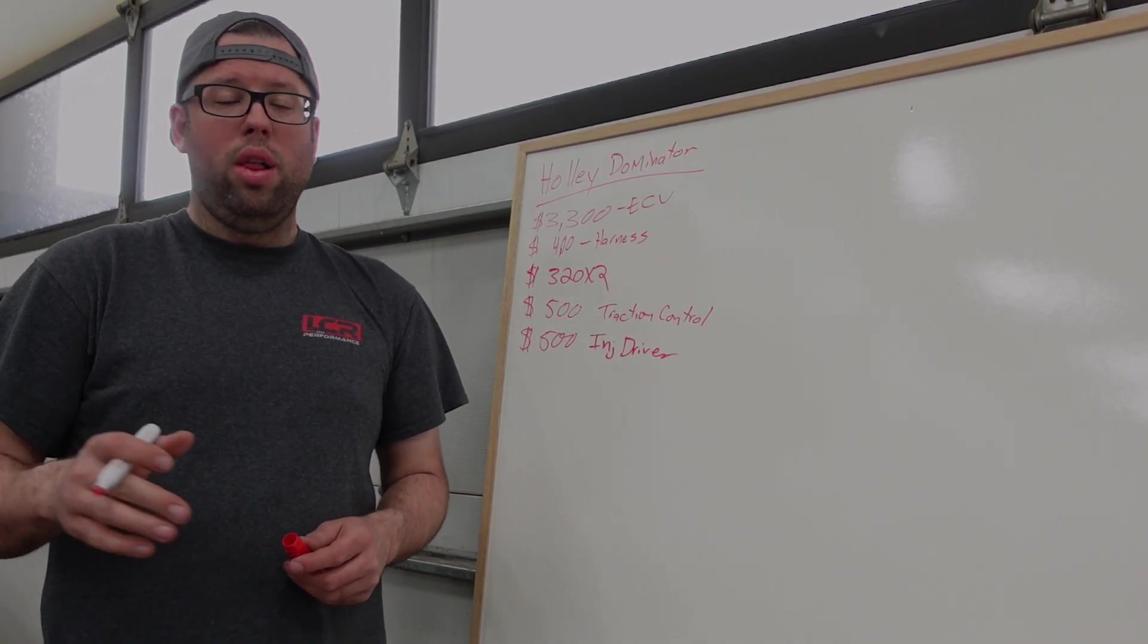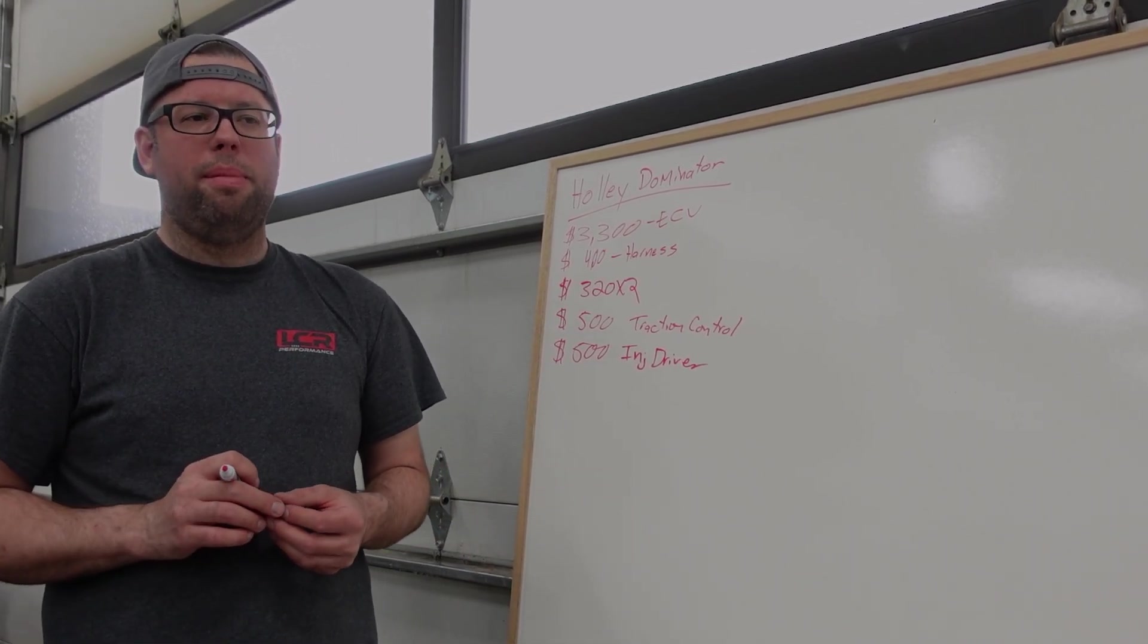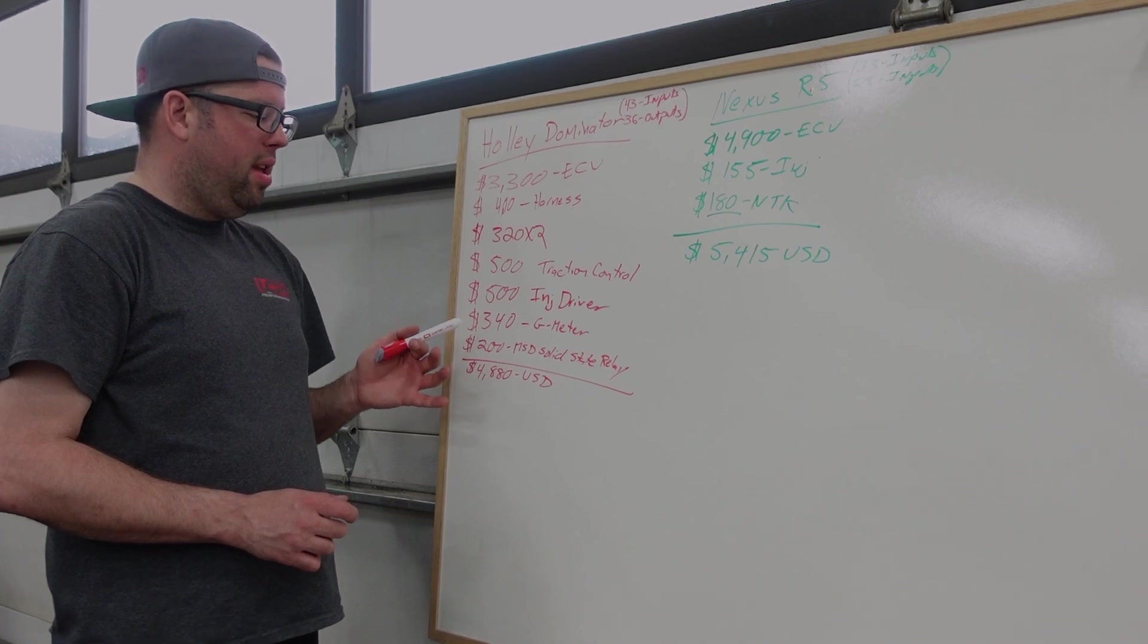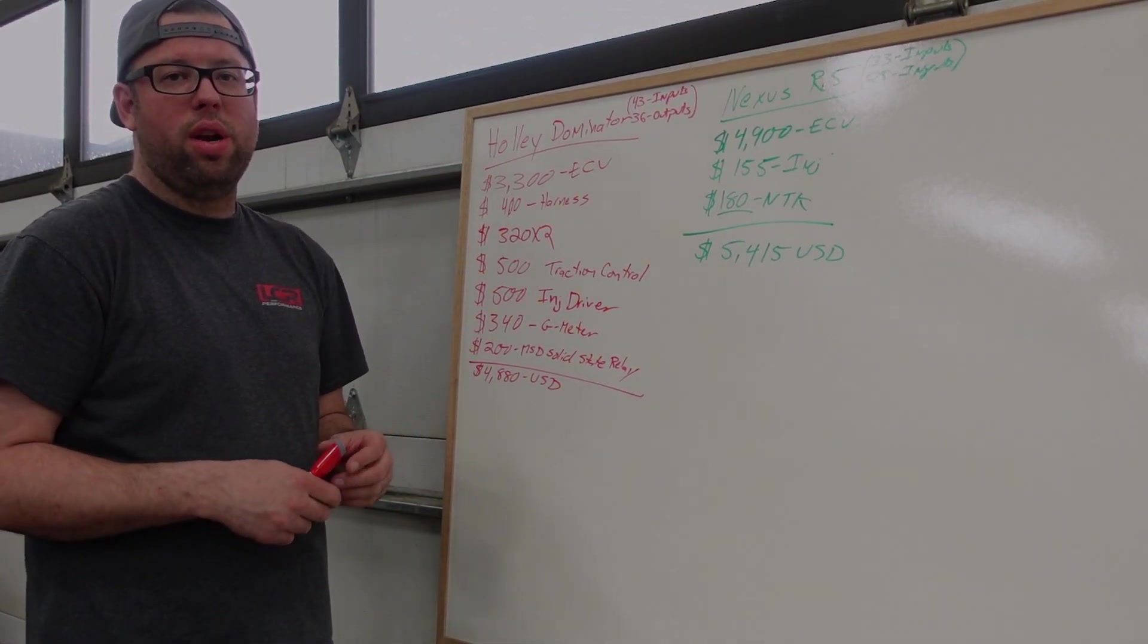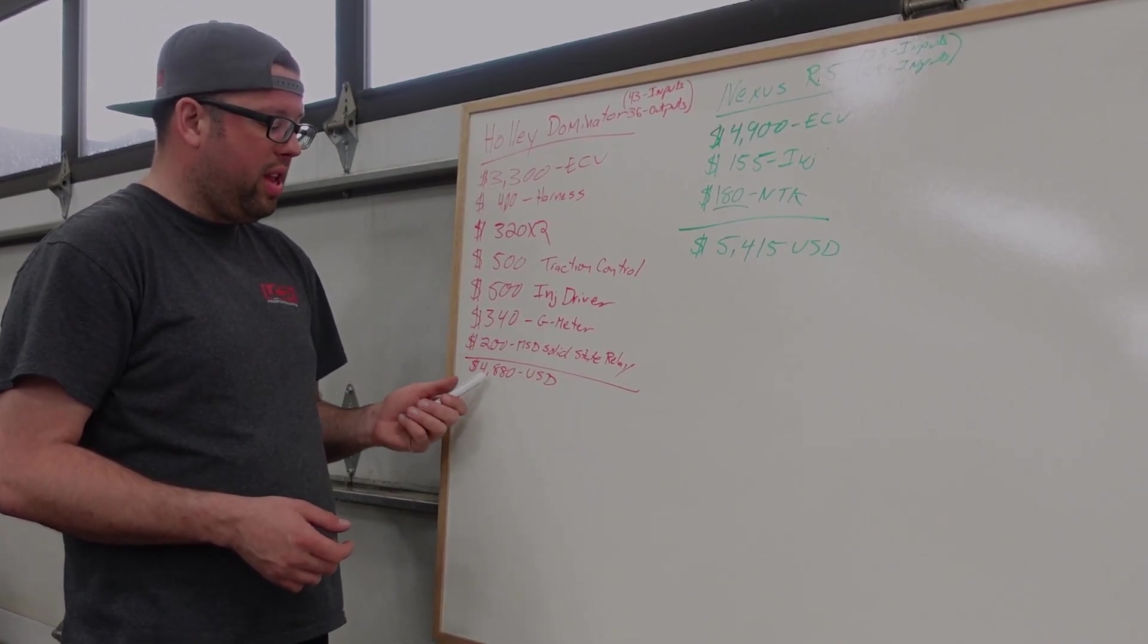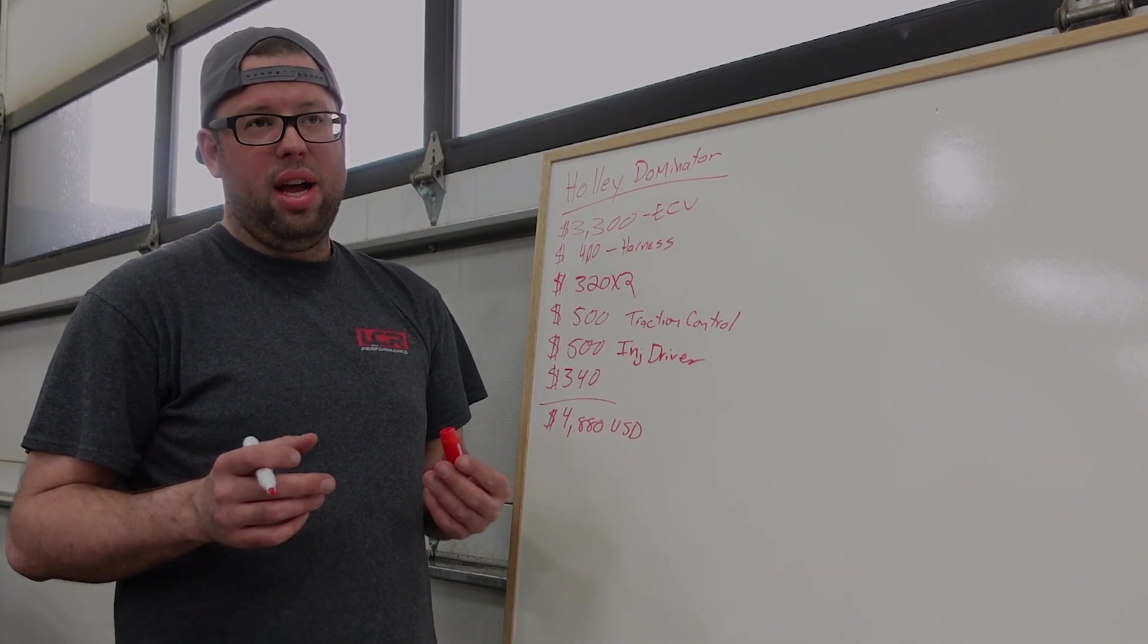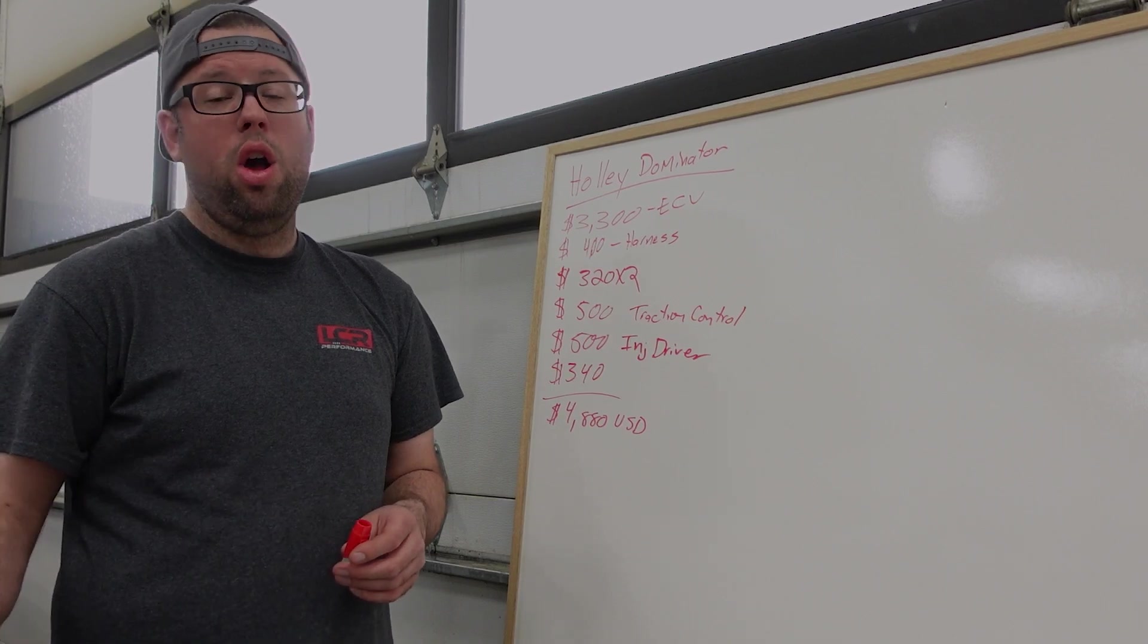Next, the Haltech can run 18 injectors. The Holley can only run eight. So to compare them the same, it needs now the injector driver, which you only can drive 16. So that's another $500. Next, G-meter. Holley does not have a G-meter built into it. Haltech actually has an IMU. That's an inertia management unit. What is that? We'll go over that later on, but it's basically six axis G-meter is what it is. The Holley can only get the X and the Y. The X and the Y one is $340. Next will be the MSD solid state relay that you'll need. Because once again, the Holley cannot trigger anything straight from the ECU, meaning the trans brake and whatnot. So the MSD solid state relay, the Holley will trigger it and trigger out. So that's another $200. Gives you a total now of $4,880 US.